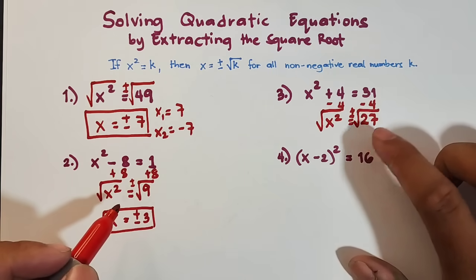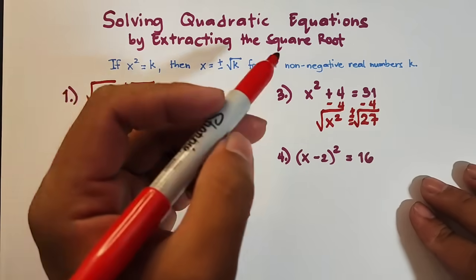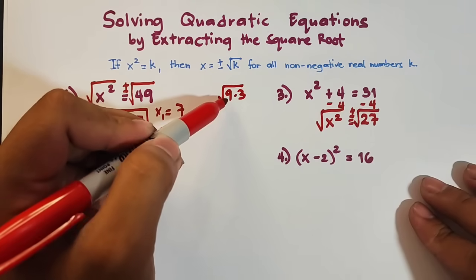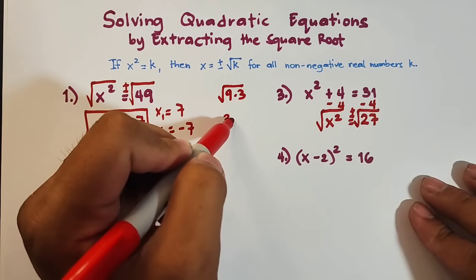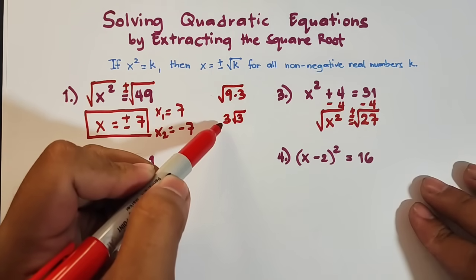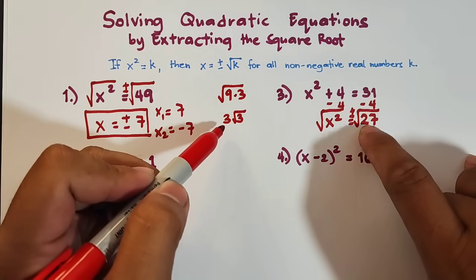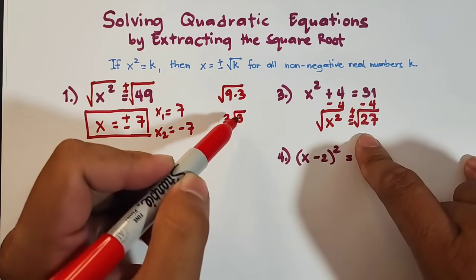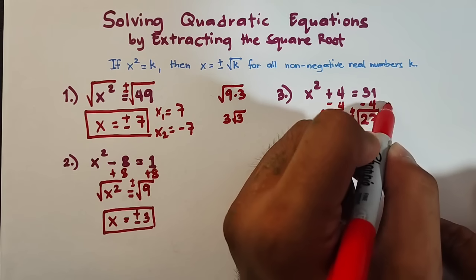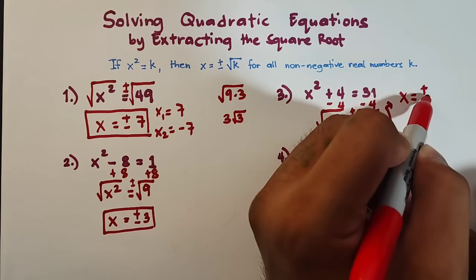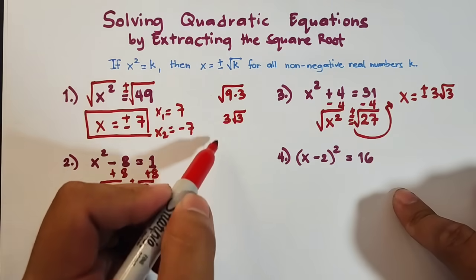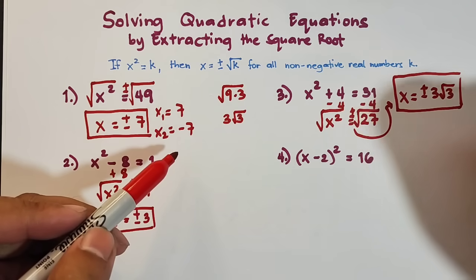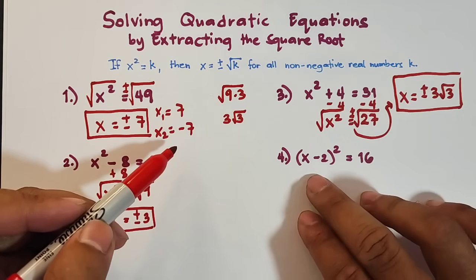Since 27 is not a perfect square, we need to simplify it. We factor out 27 as 9 times 3, and the square root of 9 is 3. So the square root of 27 simplifies to 3 square root of 3. The answer is x is equal to positive or negative 3 square root of 3, meaning the roots are 3√3 and negative 3√3.